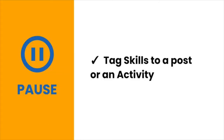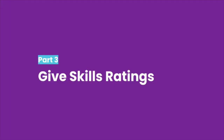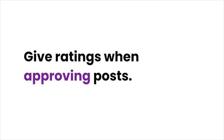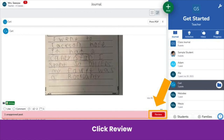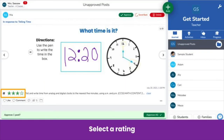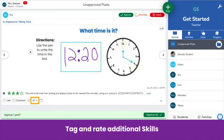Pause the video now and tag skills to a post or an activity. Once skills are tagged to posts, give ratings to track progress toward standards. We recommend giving ratings when approving posts. When you click Review, you see tagged skills at the bottom of the post. Simply select your rating. You can also tag and rate additional skills at this step by clicking the graduation cap.